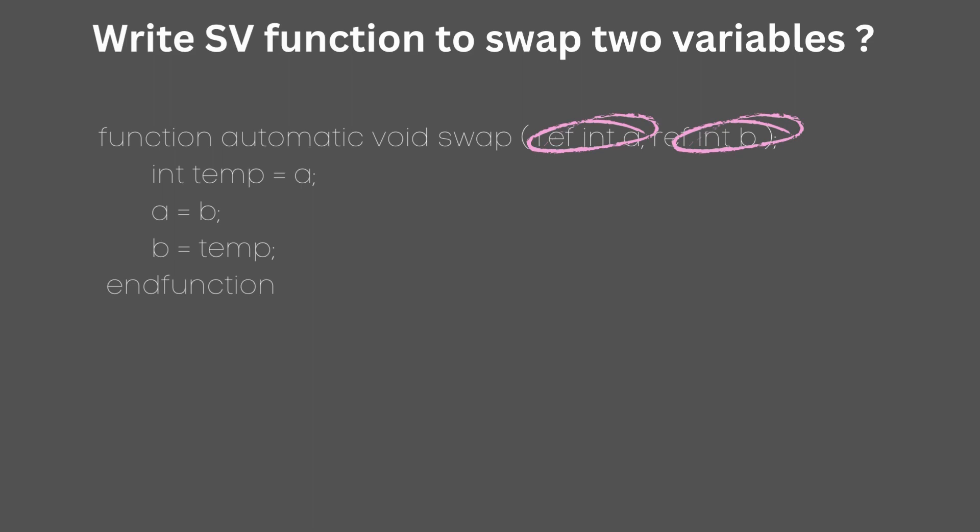If we did not explicitly use the reference keyword and passed only the values, then the values for both int a and b won't be swapped.